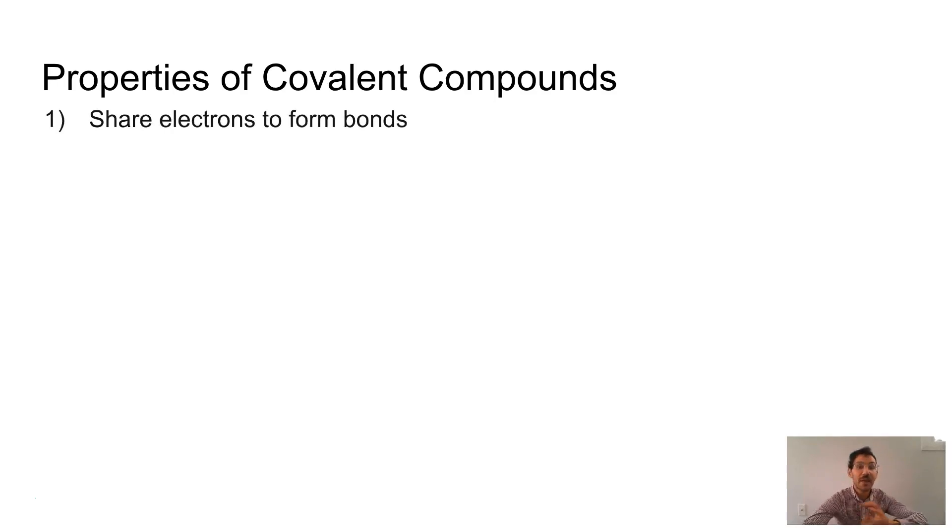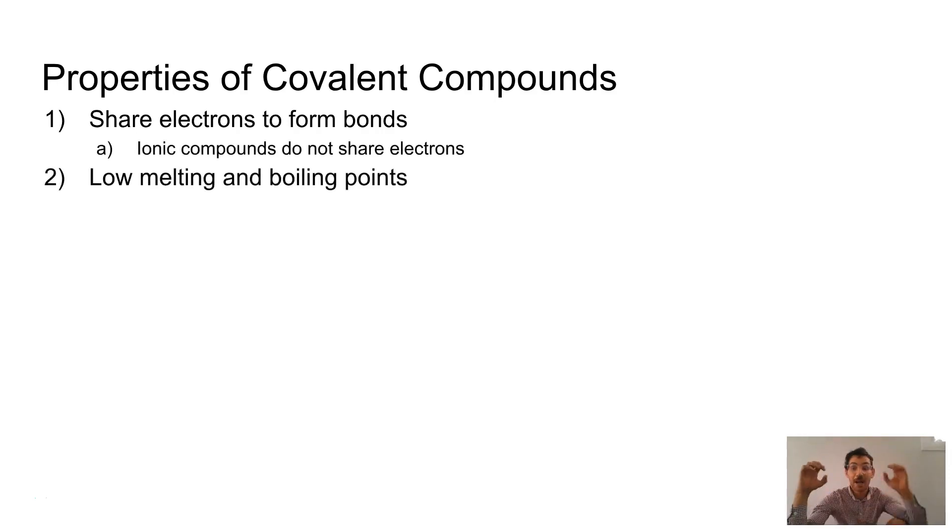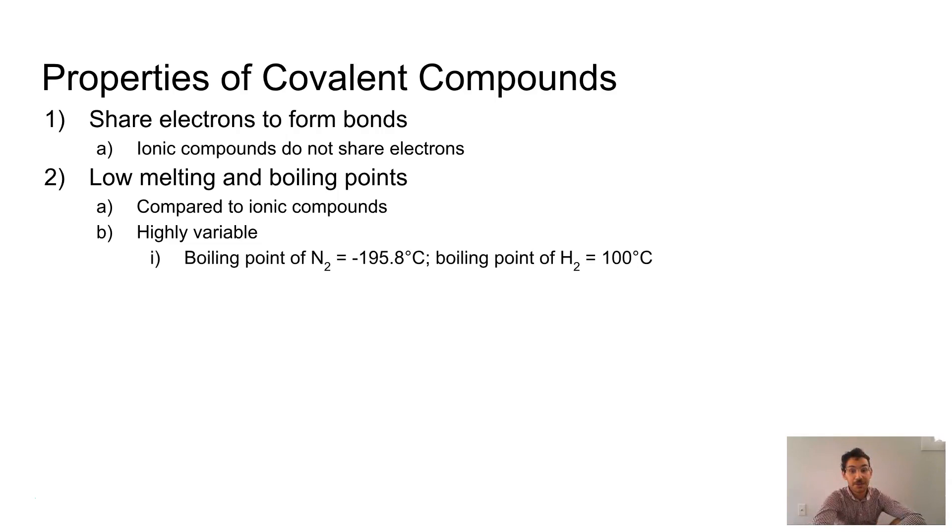Properties of covalent compounds would include that they share electrons to form bonds. That's what we've been talking about. Ion compounds do not share electrons. Remember they are held together by their opposite tractions. Unlike ionic compounds, covalent compounds typically have low melting points and boiling points. Ionic compounds, if you recall, have very high melting points and boiling an ionic compound is almost unheard of. And so this is highly variable. Some covalent compounds have ridiculously high melting points, but they're generally lower than those ionic dudes. For example, nitrogen, which we commonly see as liquid nitrogen has a boiling point of this. Well, this should be H2O for water has a boiling point at a hundred degrees Celsius. So big difference between those two liquid hydrogen has a boiling point. That's even lower than a nitrogen for the record. This should be water. Let's move on.